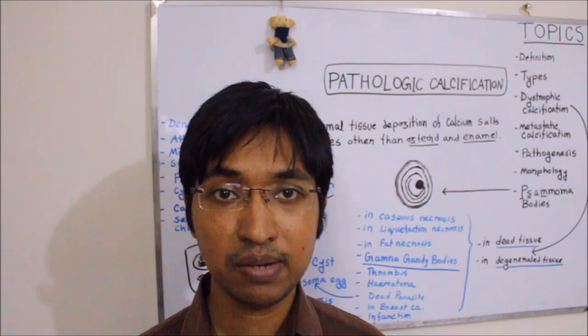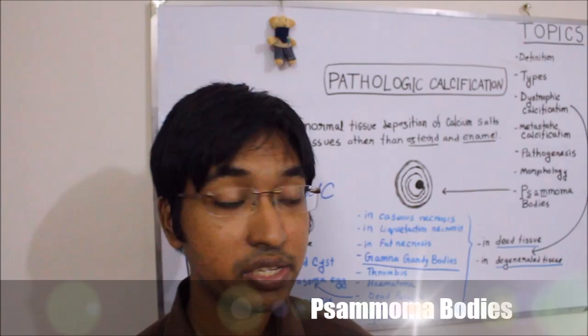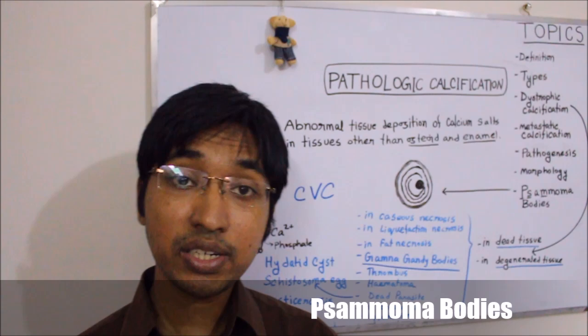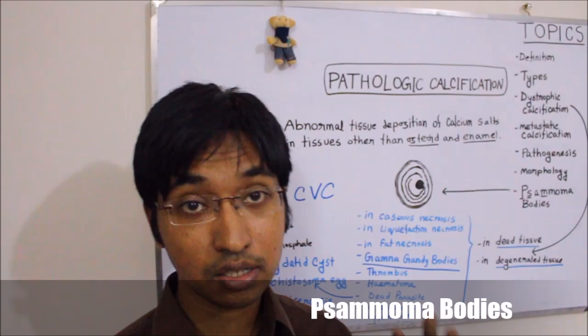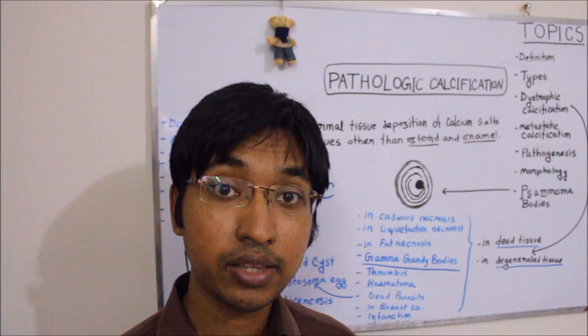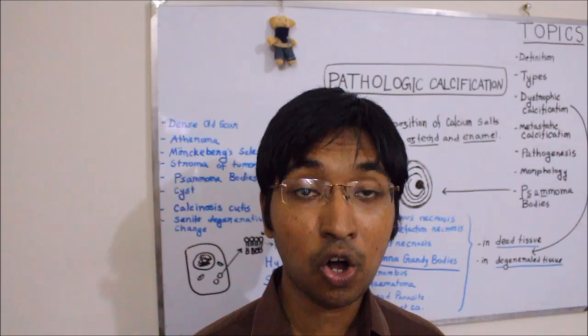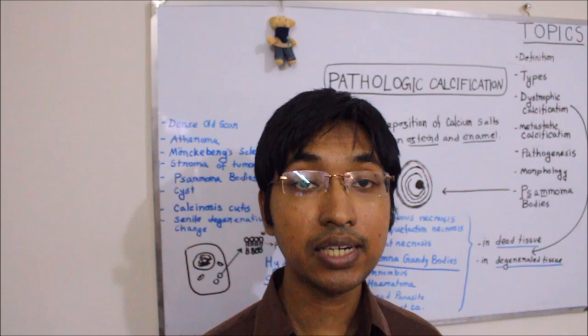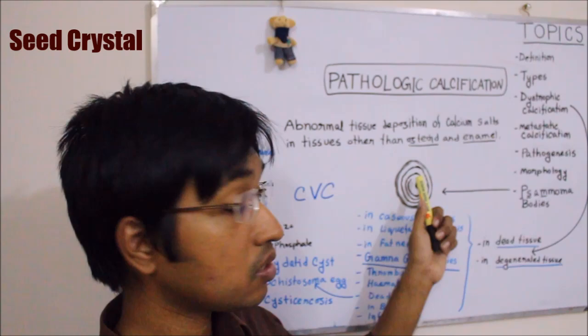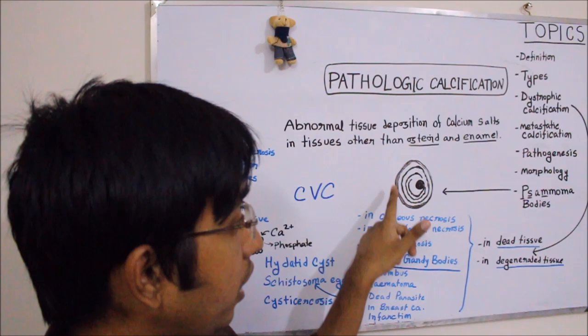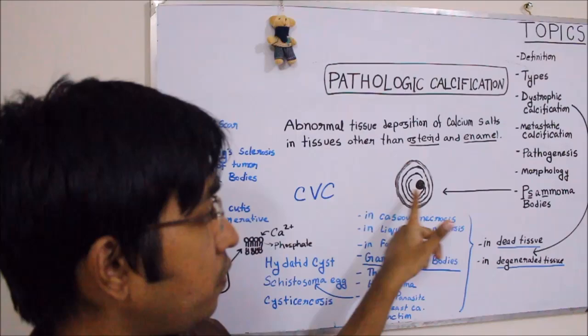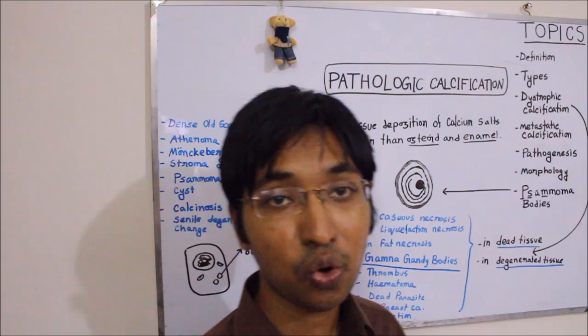One interesting finding that we will sometimes see, particularly in dystrophic calcification happening in certain tumors, is the presence of a psammoma body. What is a psammoma body? A single necrotic cell acts as a seed crystal, and calcium and minerals get deposited surrounding that necrotic cell in a laminated fashion. This gives the appearance like a grain of sand — recall that 'psammoma' came from the word 'psammos' meaning grain of sand. At the center you can see the seed crystal derived from a single necrotic cell, and surrounding that, calcium and minerals are deposited in layers in a concentric, laminated form. This entire structure is known as a psammoma body.